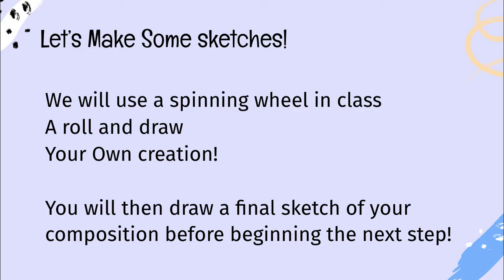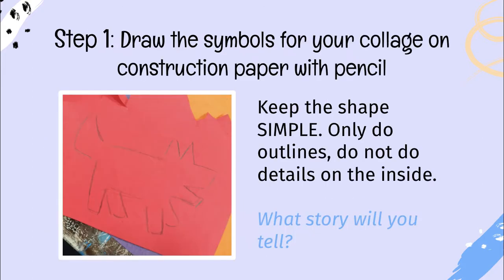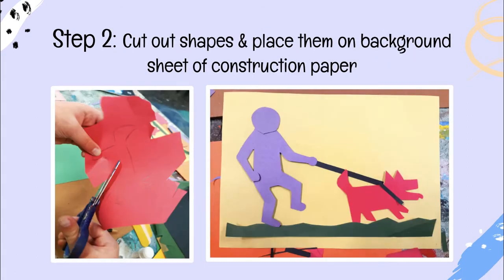You've already done some sketching and created some Keith Haring sketches, so now you're going to draw symbols for your collage on construction paper with pencil. Keep the shapes simple — only do outlines, do not add any details on the inside. What story will you tell?